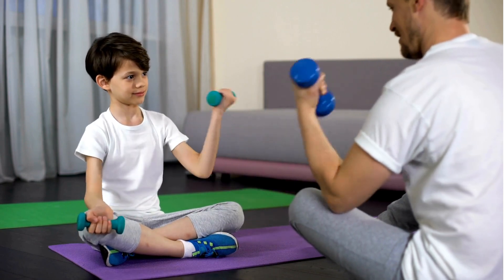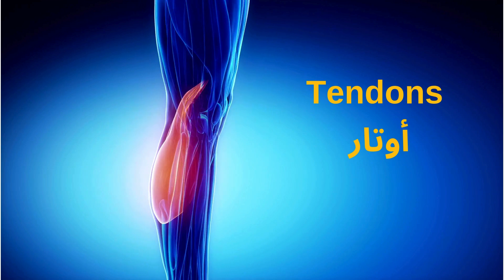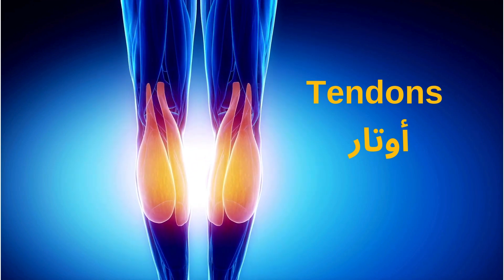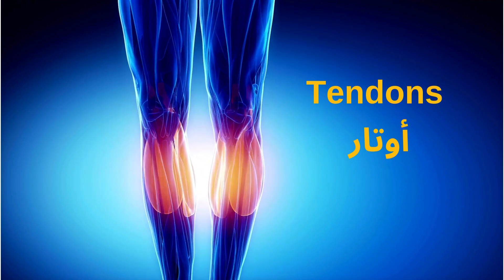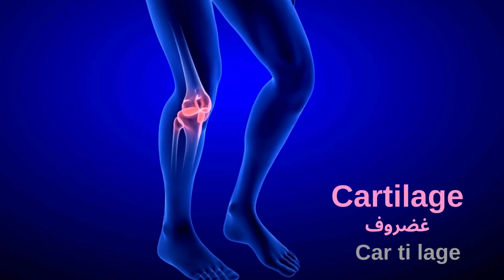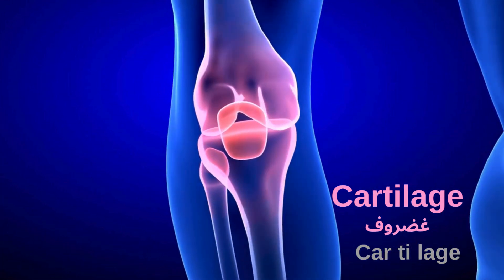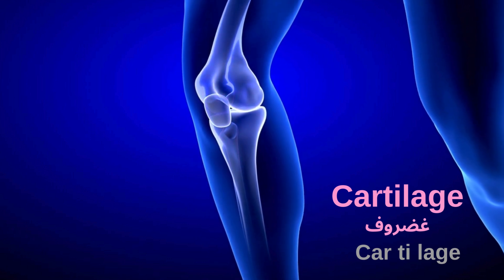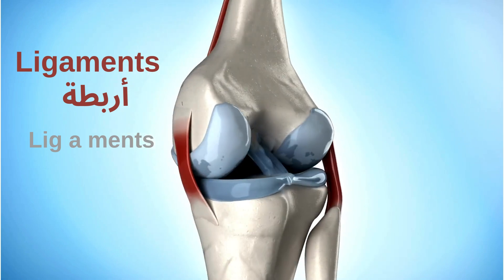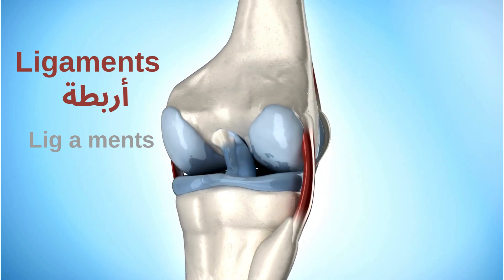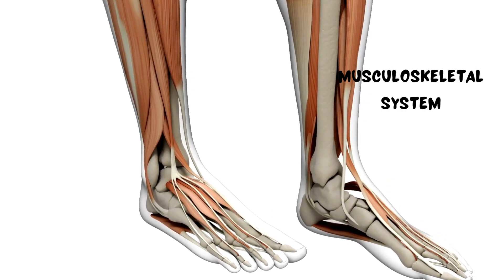Here we have the organs of the musculoskeletal system: bones, muscles, and tendons — the tendons are the highlighted part and are found in the legs and arms. Another organ is the cartilage. As you see here, this is the knee cartilage. And we also have ligaments. So those — the tendons, the cartilages, and the ligaments — are organs in the musculoskeletal system, together with the bones and the muscles.